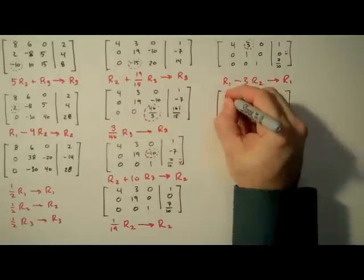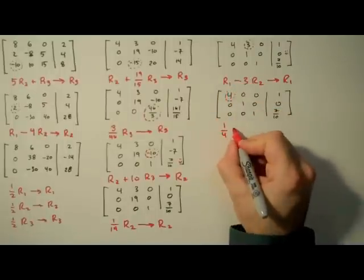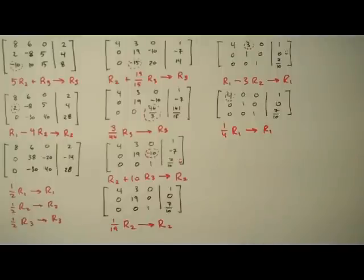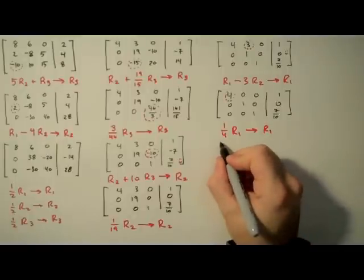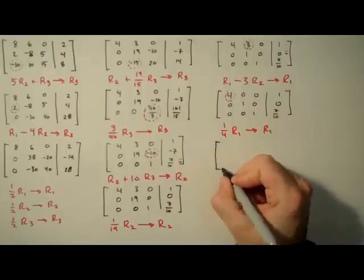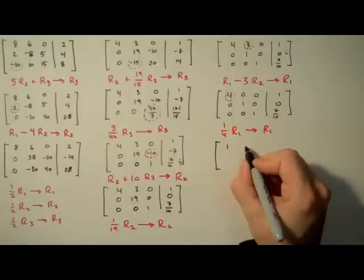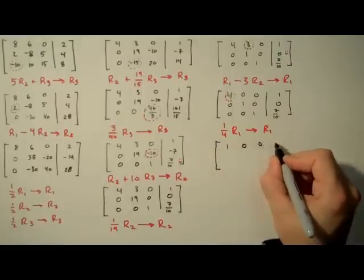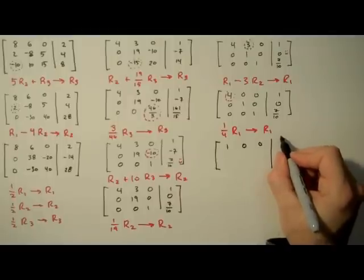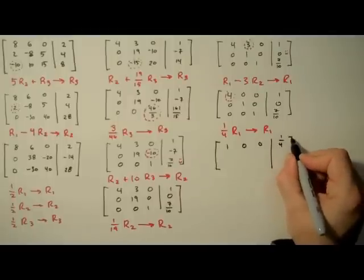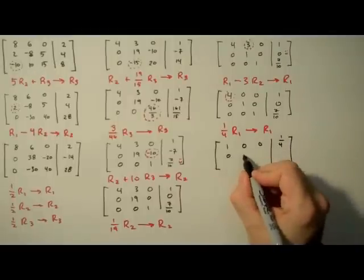All right, last step. This 4 needs to be a 1. In order to do that, we'll multiply row 1 by 1 fourth. That gives us in the first entry, a 1, and then a 0, a 0, and this will be 1 fourth. And we're done.